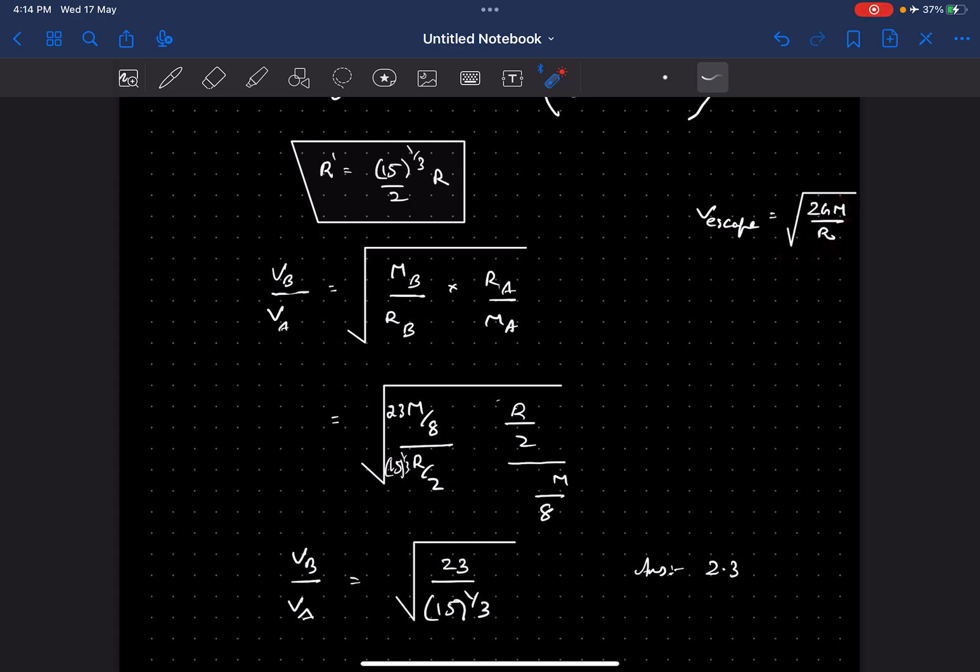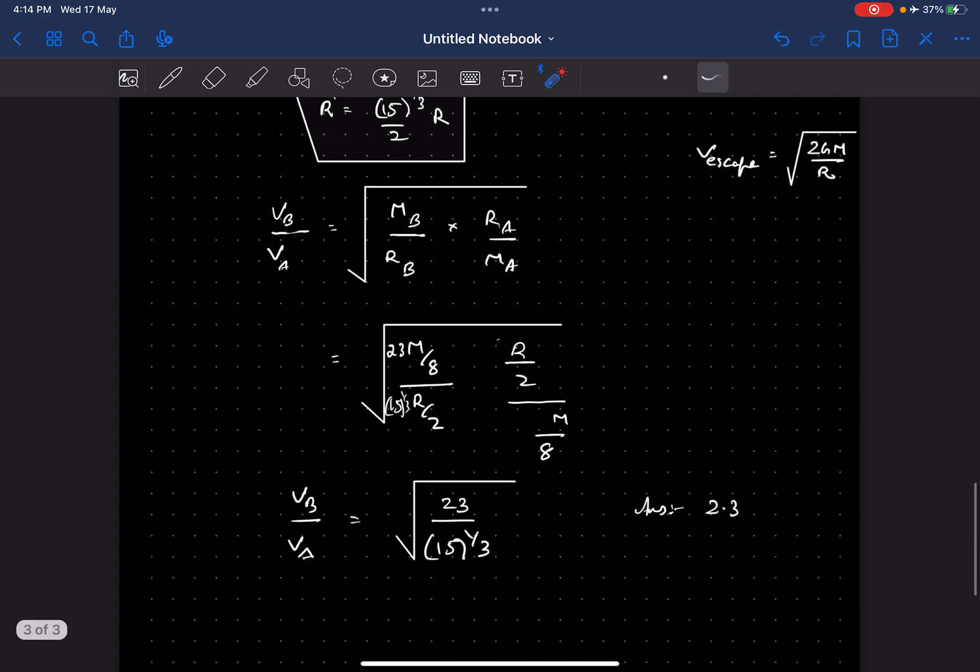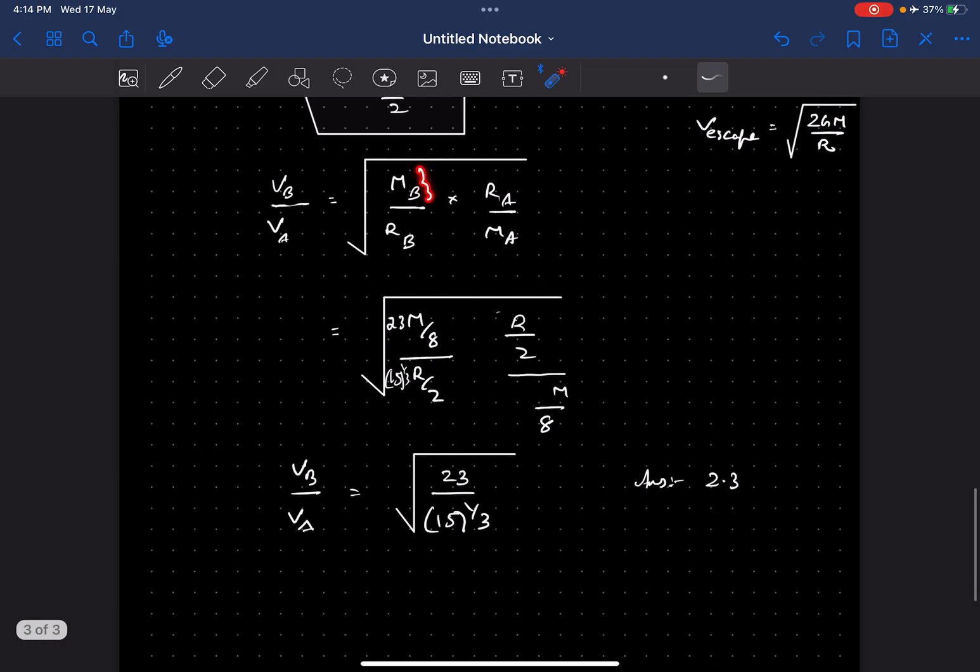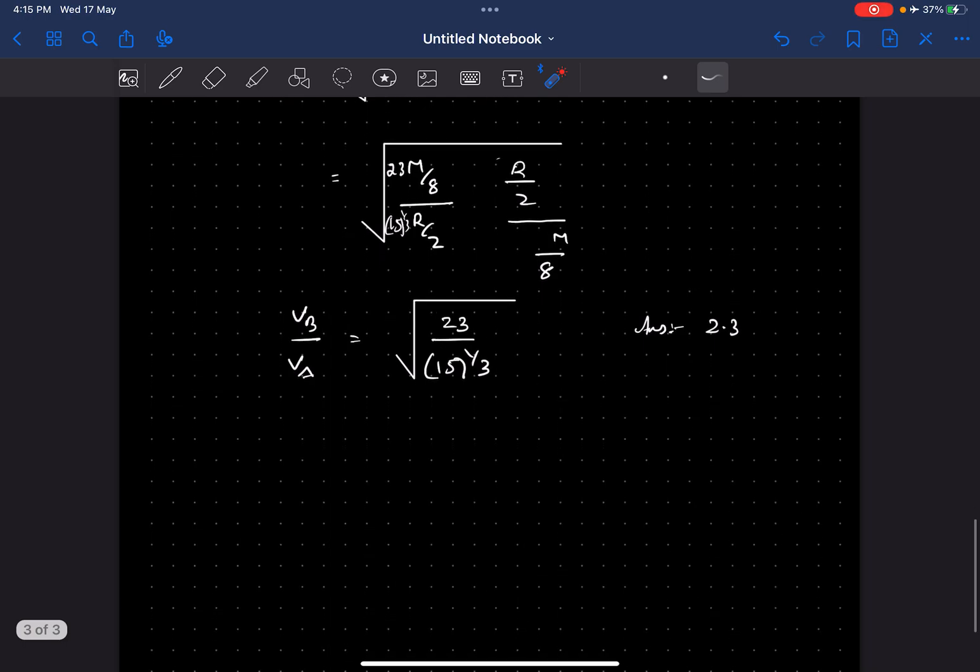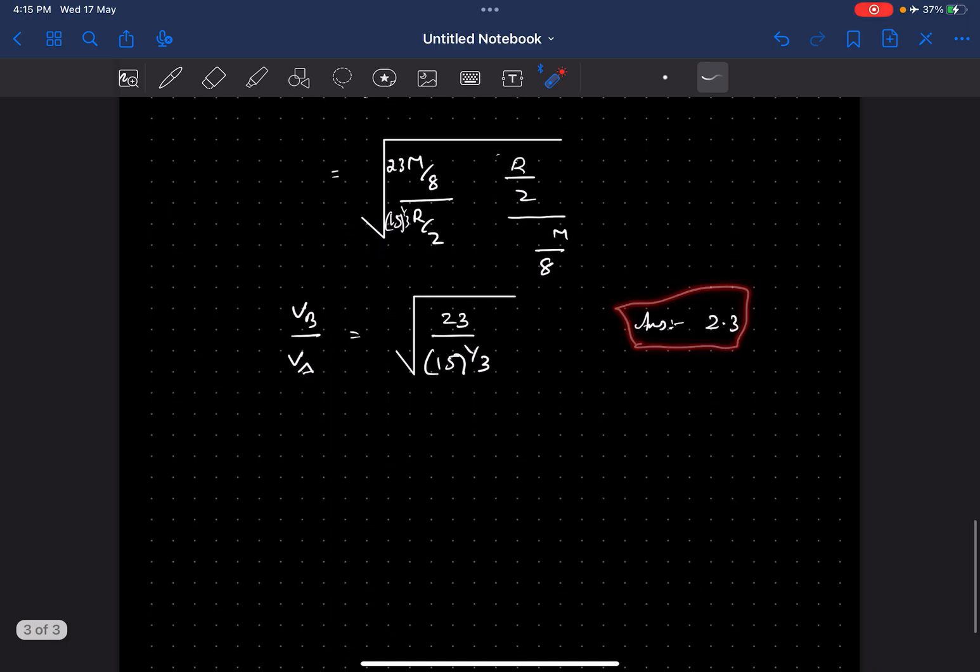As we have figured out all of them, we just have to put it in the formula. So finally after the interaction process, m_B we calculated to be 23m by 8, and the radius of B is this. Radius of A, it's given that it's halved, and we calculated the mass of A to be m by 8. Once you plug it in, you'll get the answer as 2.3. Thank you.